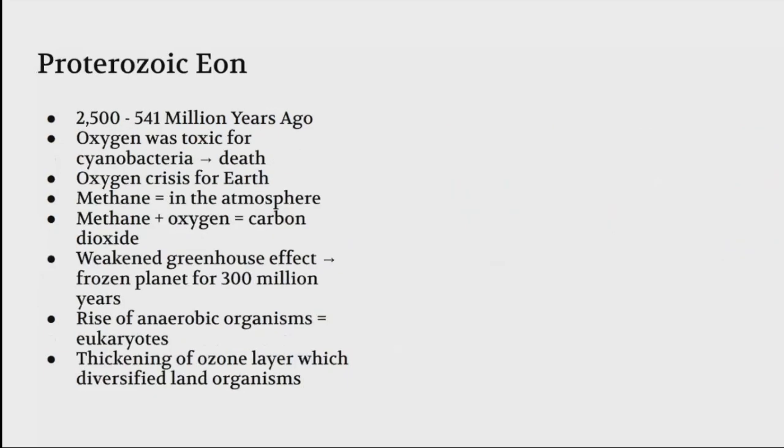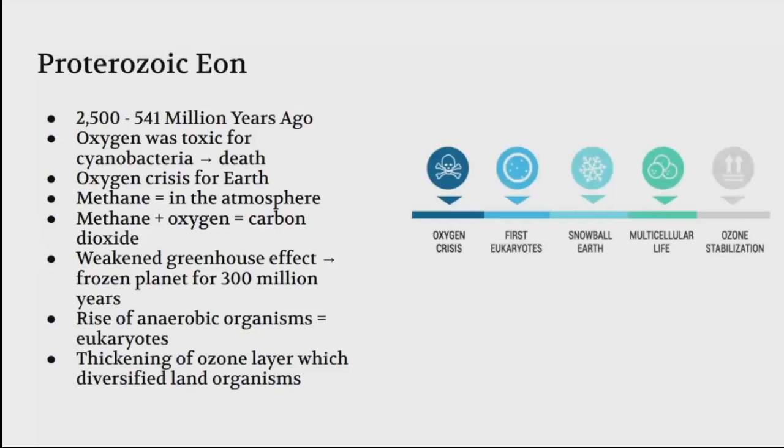The Proterozoic eon was from 2,500 to 541 million years ago. Oxygen became toxic for cyanobacteria, leading to their death. Because these cyanobacteria were producing oxygen, there's an oxygen crisis for Earth. Methane is another element in the atmosphere, and methane plus oxygen equals carbon dioxide. This weakens the greenhouse effect, and because greenhouse effect insulates the Earth, the planet became frozen for 300 million years.